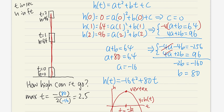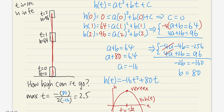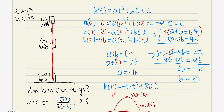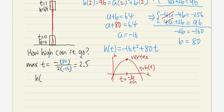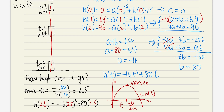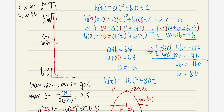The maximum height occurs at t=2.5, so we plug that into the equation: h(2.5) = -16(2.5²) + 80(2.5). Working that out gives a nice number: h = 100 feet. So the maximum height is 100 feet. I'll label that on the graph: h = 100.